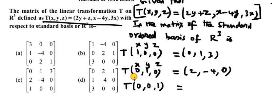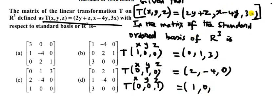Now compute T(0, 0, 1): substitute x=0, y=0, z=1. For 2y + z: 2 into 0 plus 1 = 1. For x − 4y: 0 minus 4 into 0 = 0. For 3x: 3 into 0 = 0. So T(0, 0, 1) = (1, 0, 0).